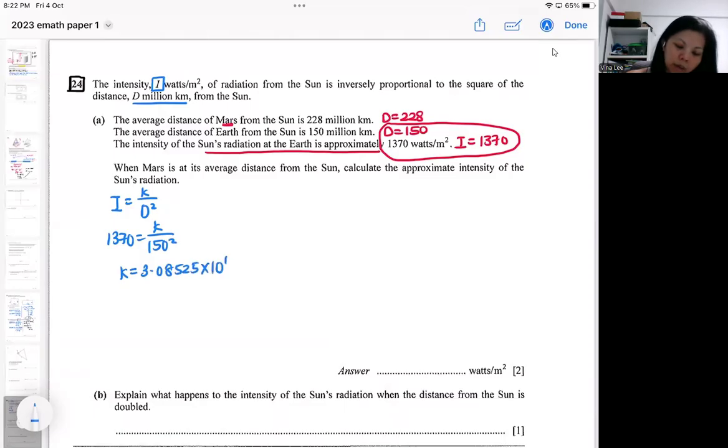In my working, I put the million or that. Then after that, I'm going to be using the distance, the Mars part, because we are supposed to find the intensity of the radiation for Mars. So from here, after you've gotten your k, put in your k first.